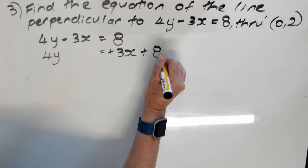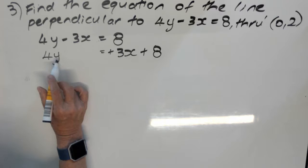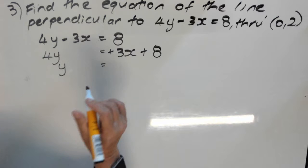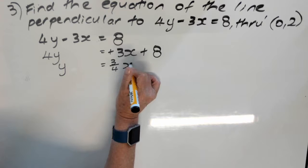My y is multiplied by 4. To undo multiplying by 4, I will divide everything in the whole equation by 4. So 3x over 4, I could write as 3 quarters x. 8 divided by 4, I'm going to write 2.